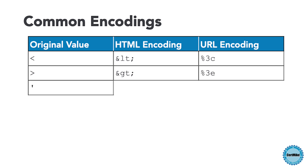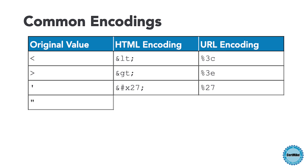The single quotation mark, used in SQL injection and related attacks, is HTML encoded as &#39; and URL encoded as %27. And the double quotation mark is HTML encoded as &quot; and URL encoded as %22.